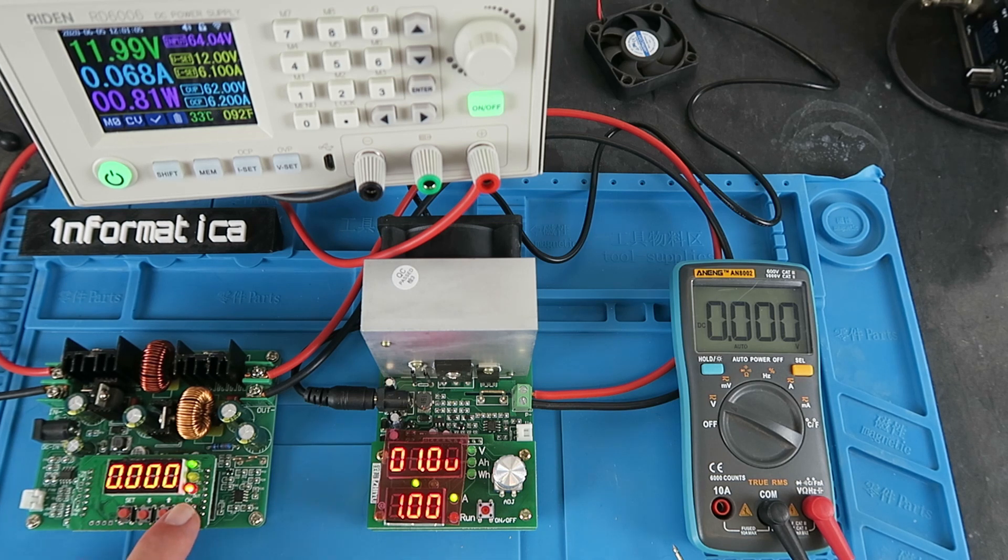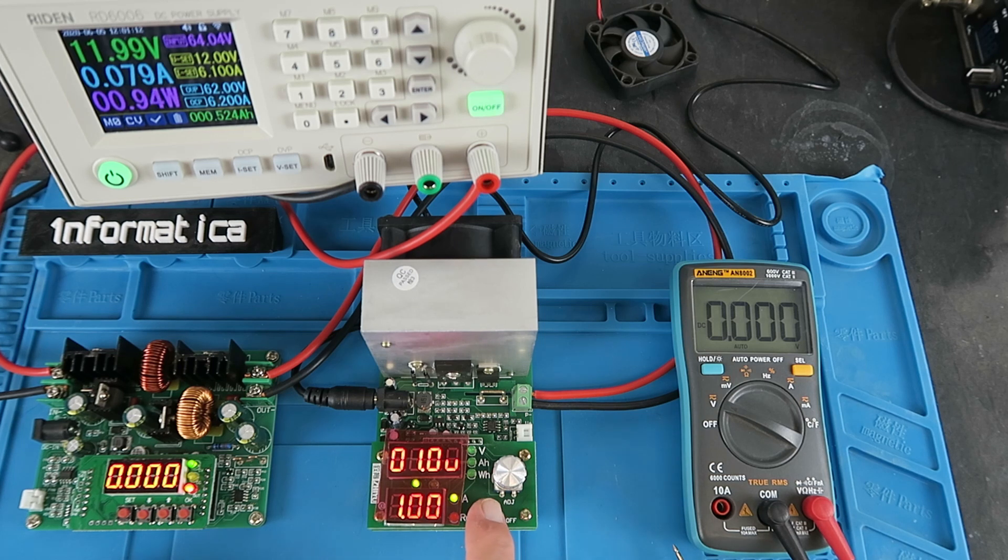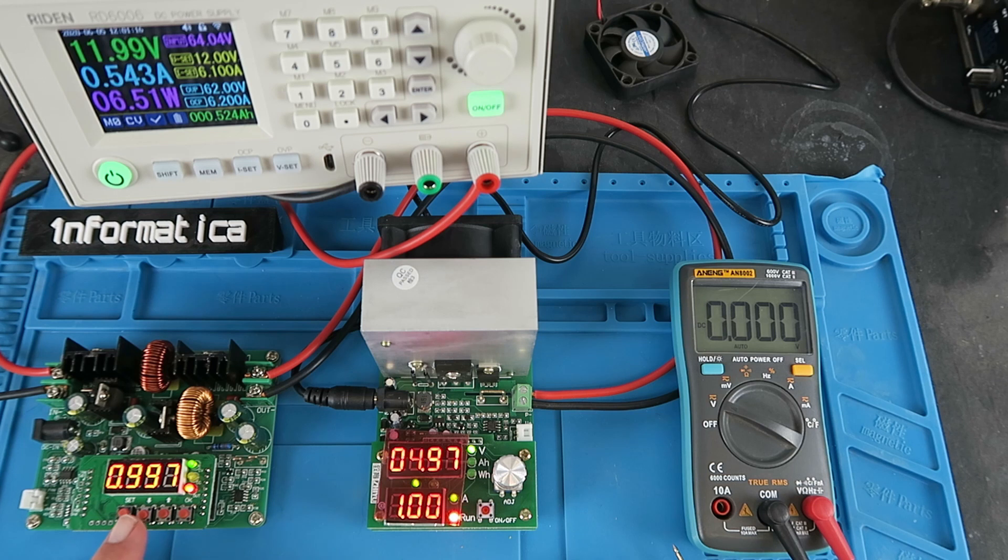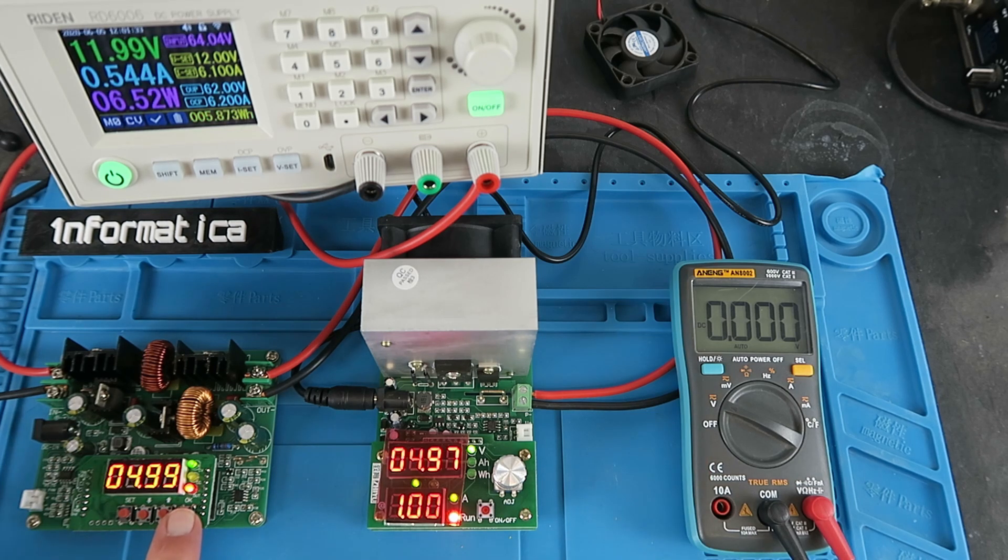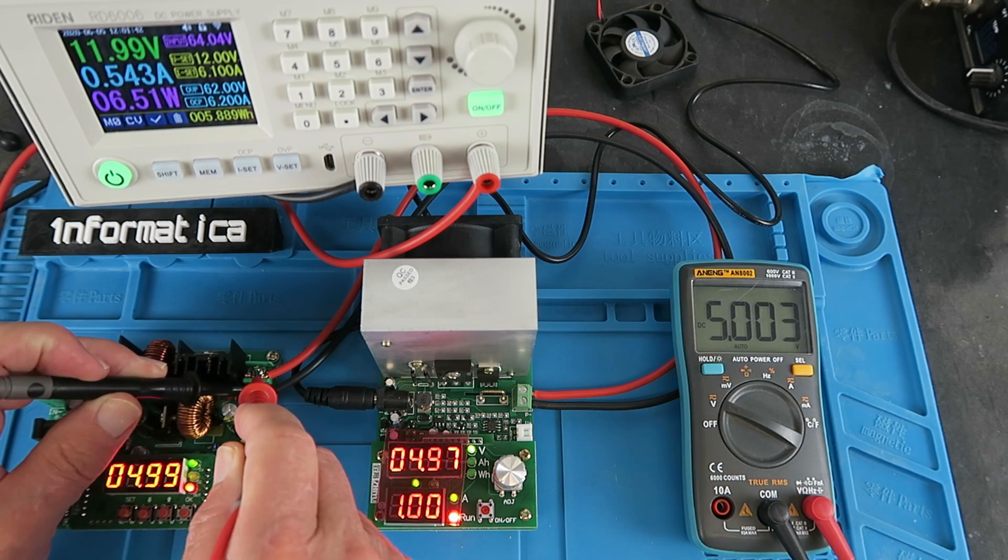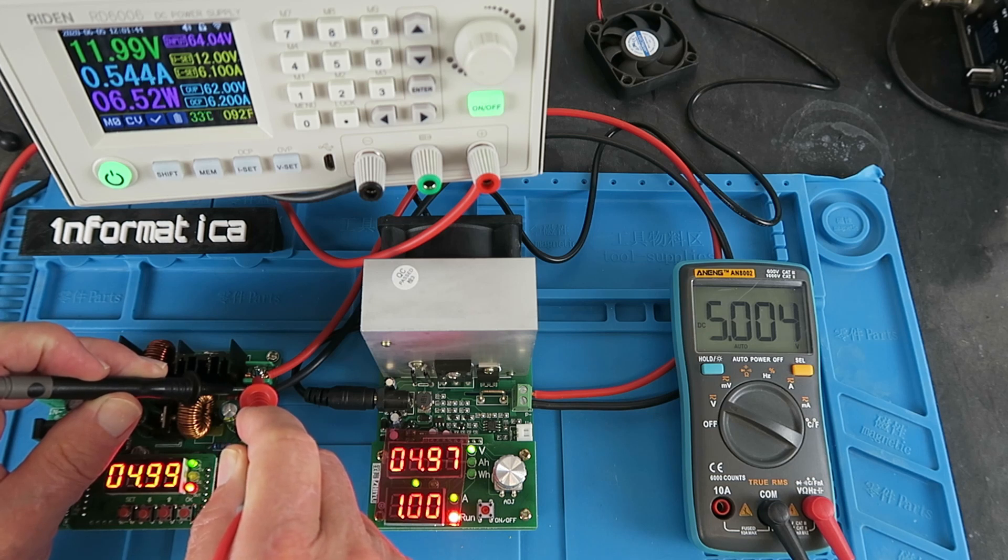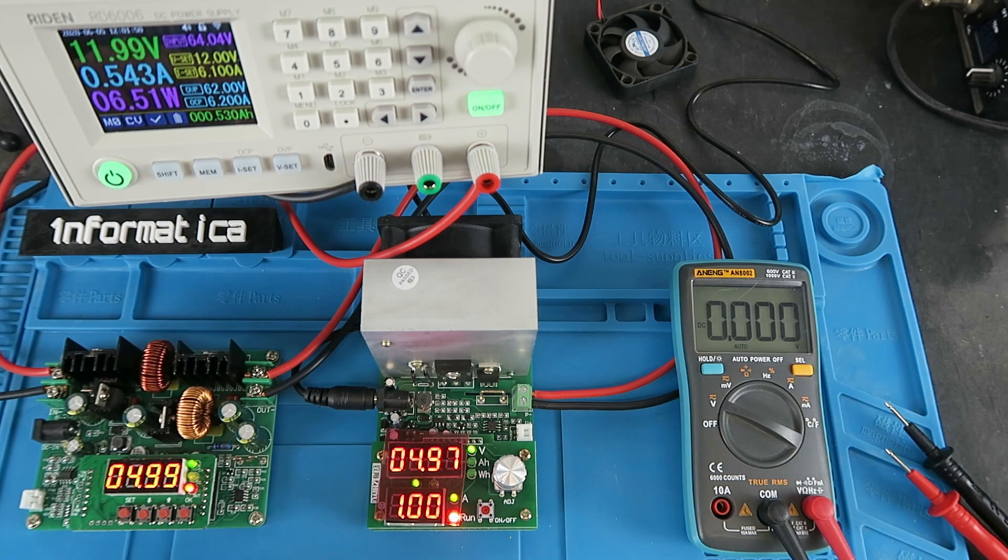Shall we switch the module on now? We can see it's in its constant voltage mode, but there's no current being drawn. Activate the load. We now see the 1 amp indicated there and 5 volts there. Let's just check our voltage with the meter as well. If we press OK, we can toggle between the voltage and the current. So it thinks it's 4.99, 4.97, and the meter gives 5.003. We're in the right ballpark.